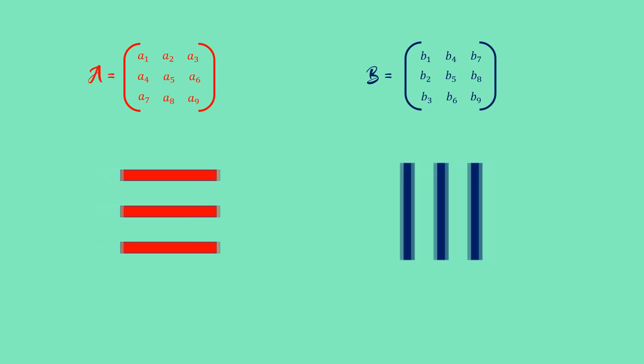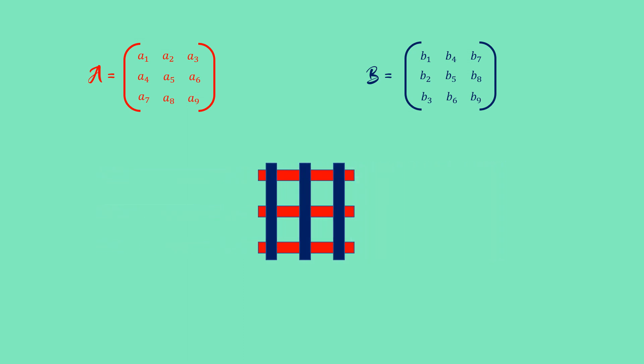But with this idea of sliding the rows and the columns of the matrices together, we only have to use each matrix element once.